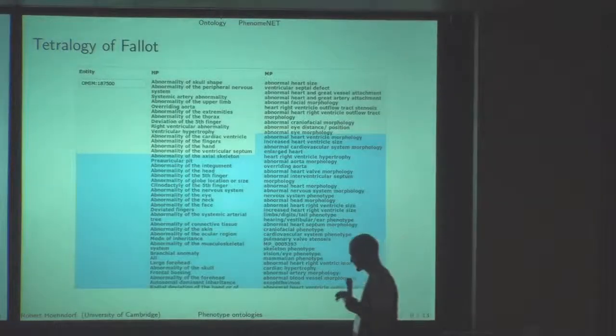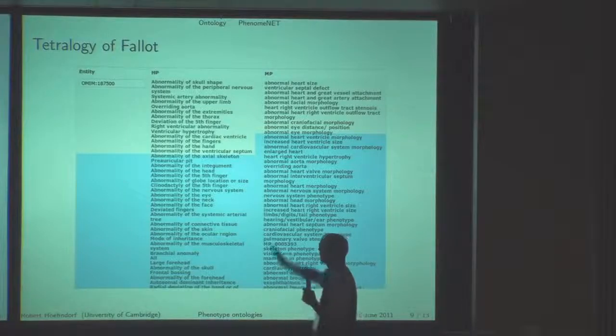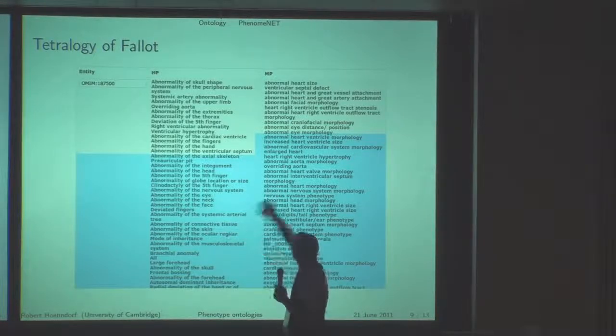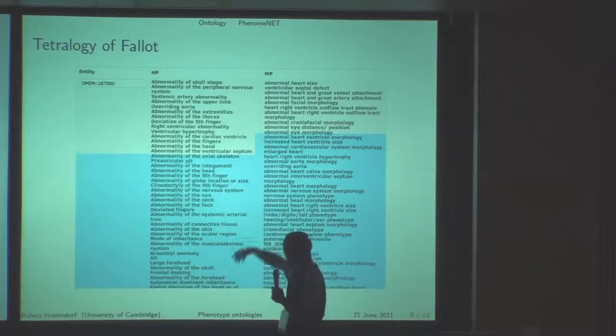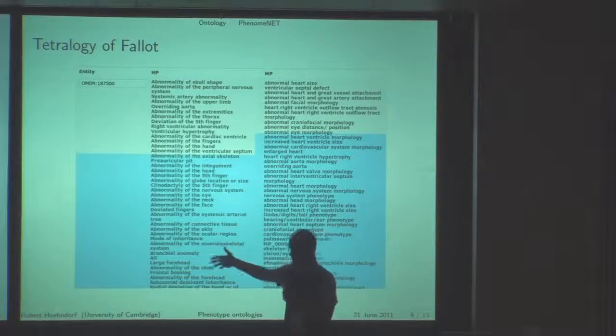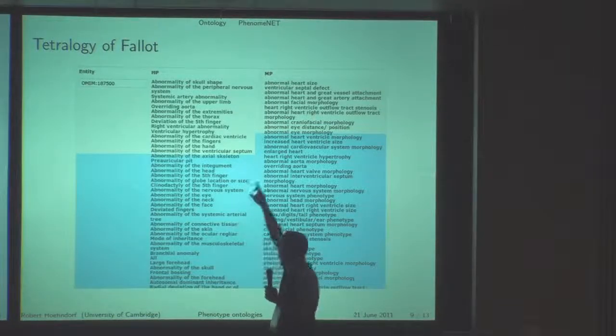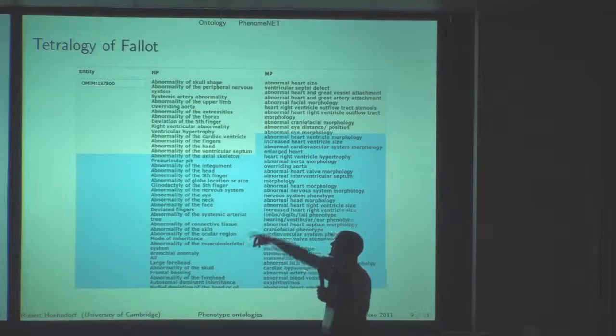What we get is this: this is the Tetralogy of Fallot example. This is for human, and this is for mouse, and there are more. It's a bit long. This is the OMIM description of this disease, OMIM 187500.